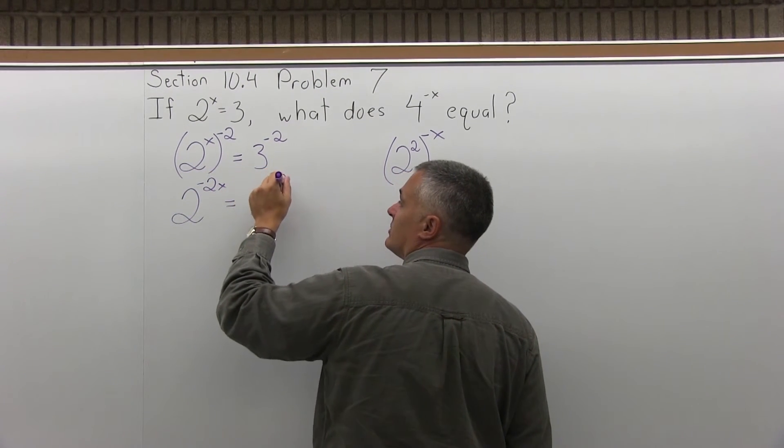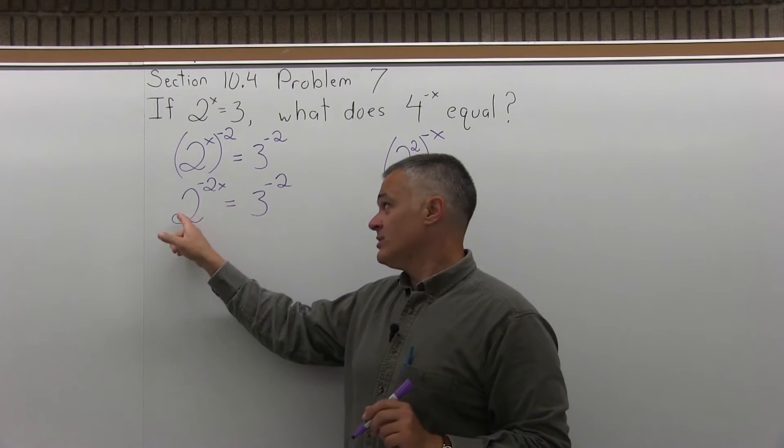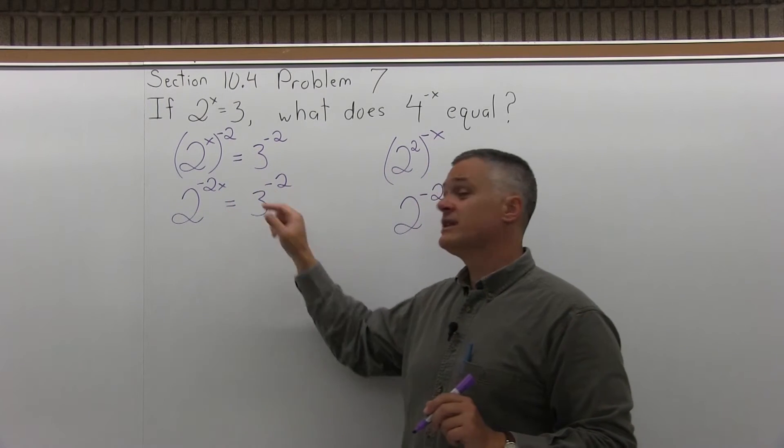And that equals 3 to the negative 2 power. I wanted to find what 2 to the negative 2x equals. Well, 2 to the negative 2x equals 3 to the negative 2 power.